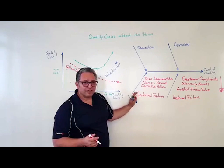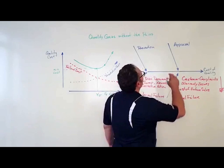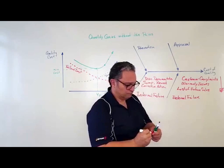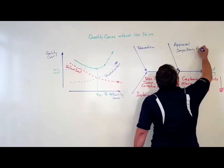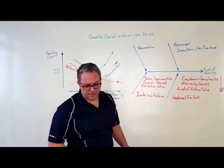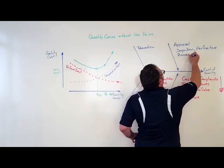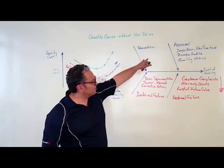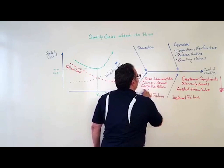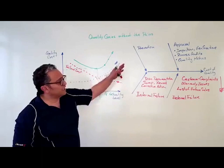So to avoid getting to internal failure, we are going to do appraisal. Appraisal of quality as we go along in process. Our appraisal activities are going to include inspection, other kinds of verification along the way. It's going to include a process audit and quality metrics. So these are activities that we are going to do to avoid getting internal failures and to definitely avoid getting external failures. So we are going to appraise quality along the way.